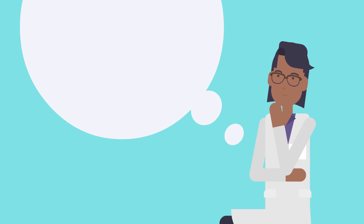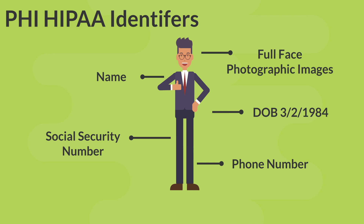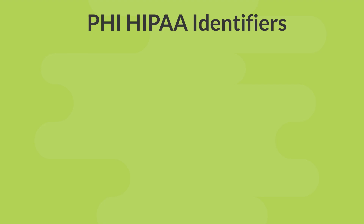What is protected health information? PHI is any demographic, individually identifiable information that can be used to identify a patient. Some common PHI identifiers are listed on the following slide.